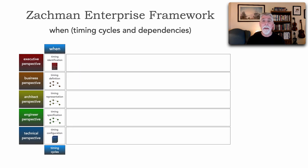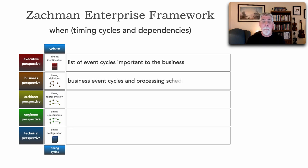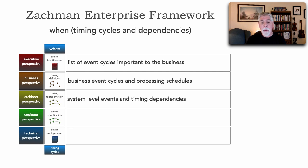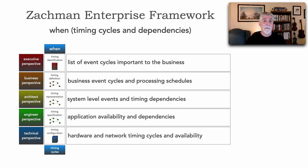The 'when' model talks about timing, cycles, and dependencies. From the executive perspective, these are the event cycles important to the business — monthly, quarterly, weekly, or nightly processes. The business perspective covers processing schedules for workflows — when workflows happen. The architect's perspective covers timing dependencies between systems: when systems may come down, when they're needed, and availability needs and dependencies. The engineering perspective covers application availability and dependencies at a lower level. The technical perspective covers availability and timing cycles — for example, when things come down for backups.